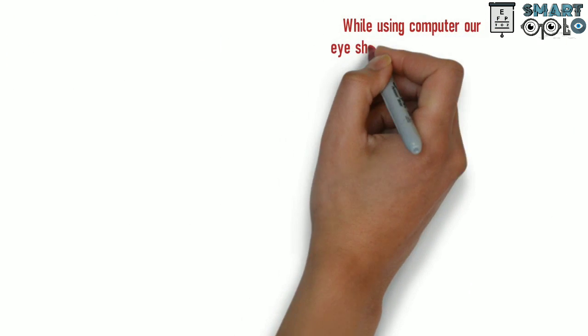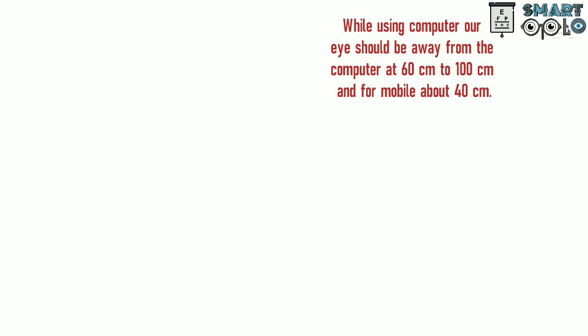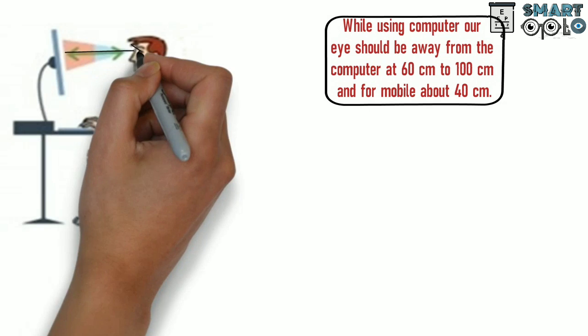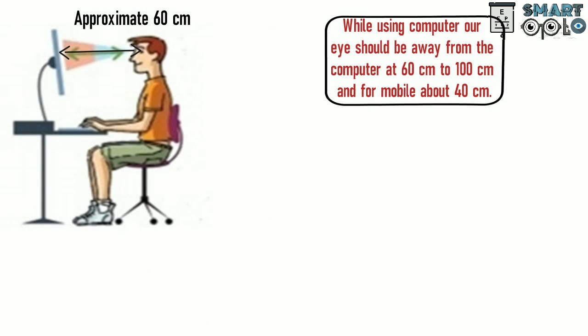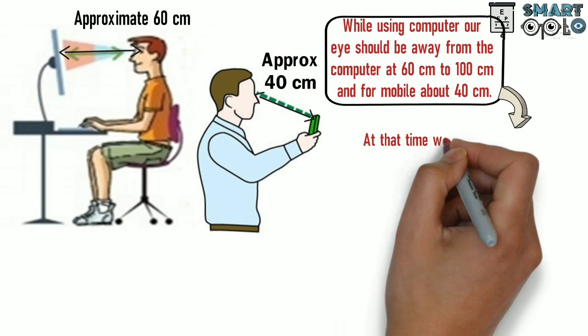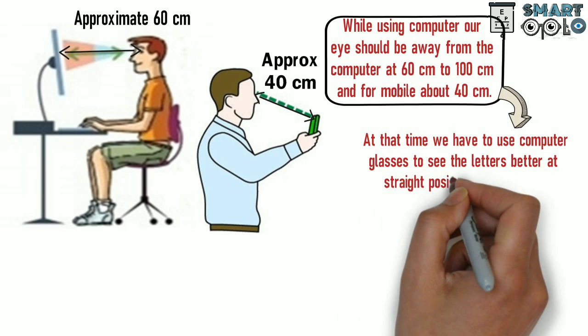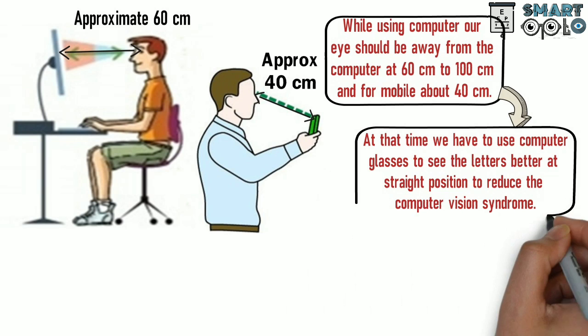While using computer, our eyes should be away from computer at 60 cm to 100 cm and for mobile about 40 cm. At that time, we have to use computer glasses to see the letters better at straight position to reduce the computer vision syndrome.